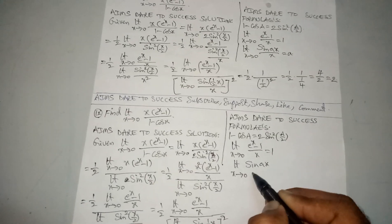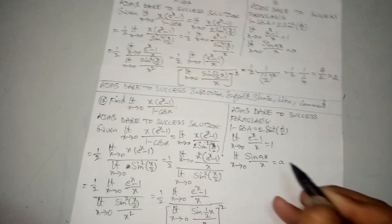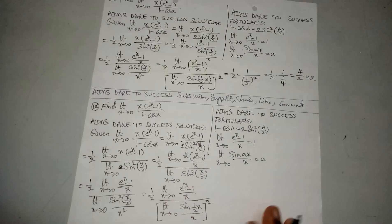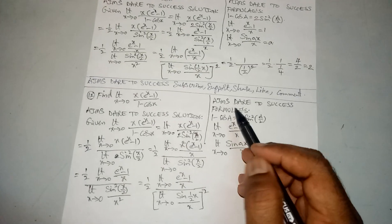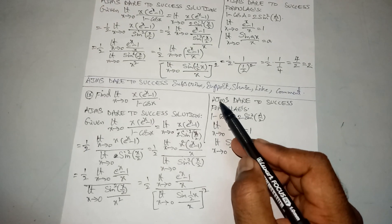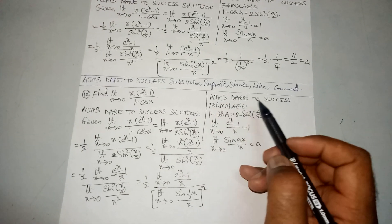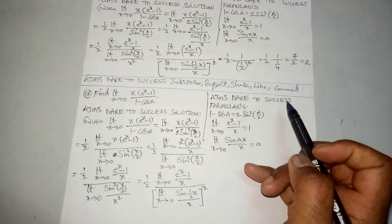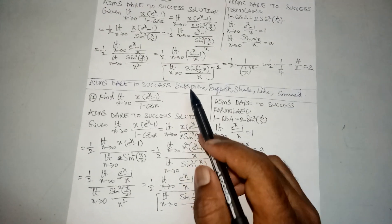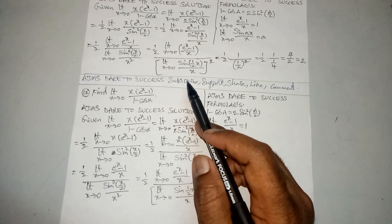So the formula is: limit x tends to 0 of sin(ax) divided by x equals a, my friends.